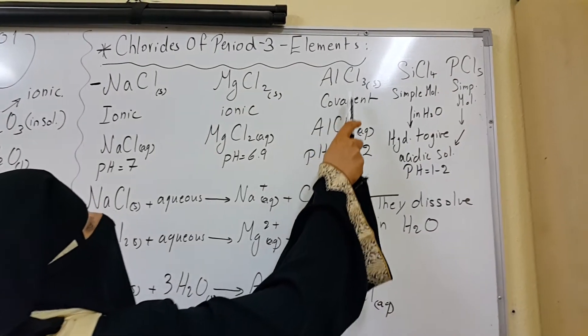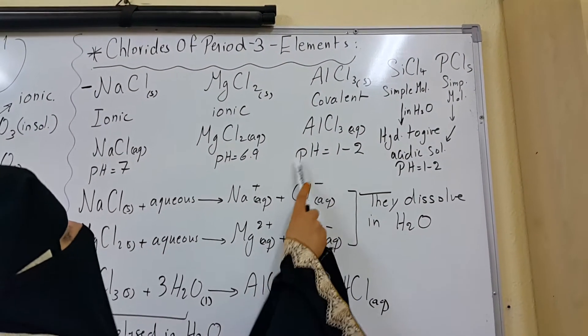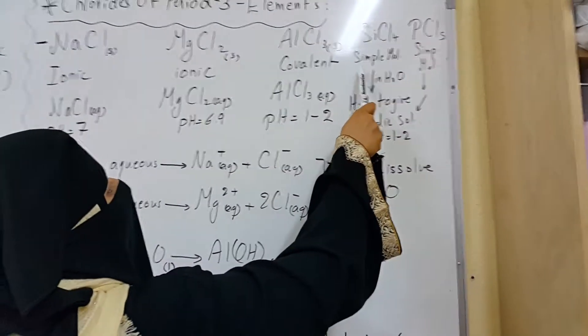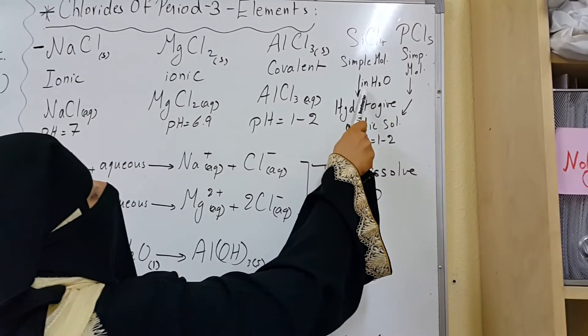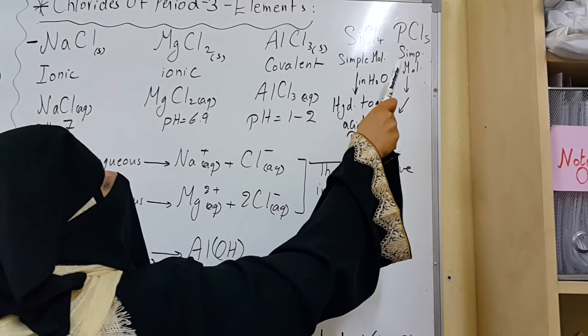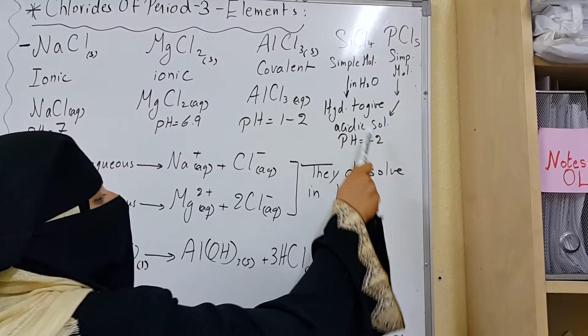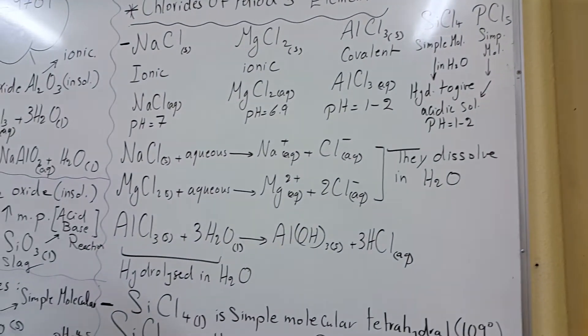Aluminum chloride is a covalent molecule that hydrolyzes in water to give a strongly acidic solution of pH 1 to 2. We'll see now the chemical reaction. Silicon tetrachloride is a simple molecular structure, which hydrolyzes in water to give an acidic solution of pH 1 to 2. PCl5, phosphorous pentachloride, has a simple molecular structure, which also hydrolyzes in water to give a strongly acidic solution of pH 1 to 2.